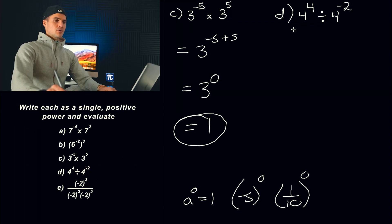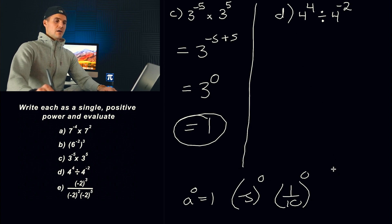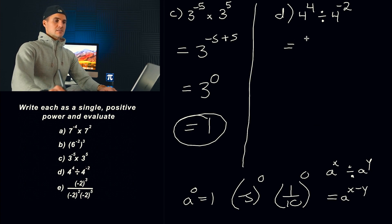Now here, notice that we are dividing two exponential expressions with the same base. And whenever you're dividing exponential expressions with the same base, what do you do with the exponents? You subtract them. Another way this could have been written is as a fraction. So 4^4 divided by 4^(-2). This and this, they both mean the same thing. The fraction is just a division. So we would have four to the power of what?